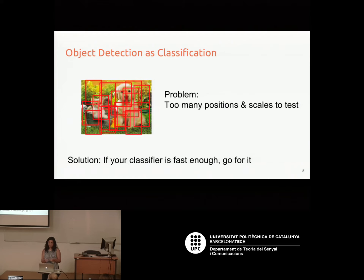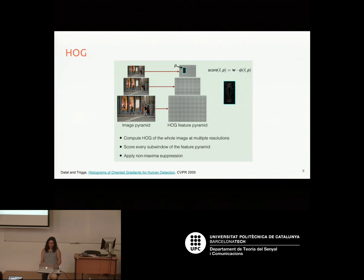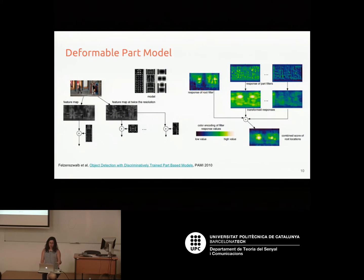The solution before deep learning was to use fast classifiers and fast features. One approach used Histogram of Oriented Gradients (HOG), computing it across the whole image at different scales with a sliding window, evaluating a linear classifier at each location — very fast in practice. There was also the Deformable Part Model, also based on HOG, which modeled objects using different parts, handling partial occlusion and different poses. This worked very well in 2010.